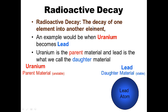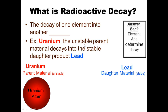That is radioactive decay: the decay of one element into another element. In this case the parent material uranium decays into the daughter material lead. For your notes, write 'What is radioactive decay?' — make sure you write the example down because it will be asked on the test. Question on the left-hand side, answer and example on the right-hand side; use the answer bank to complete the blank. Go ahead and pause this.